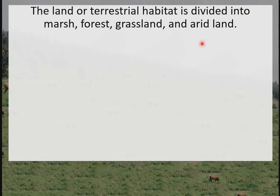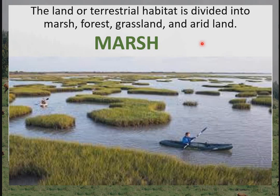The first habitat is the marsh. The marsh is a lowland habitat that is constantly flooded and most of the time it is waterlogged. Just as you can see, the marsh is always constantly flooded and waterlogged. It is the only habitat that we say is a transitional habitat.